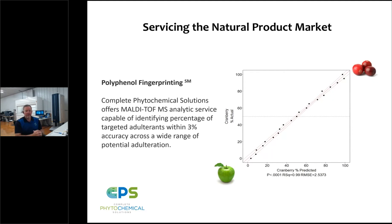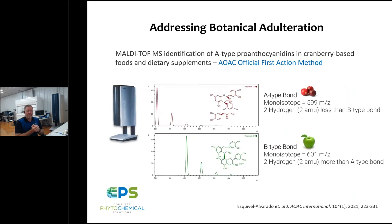There is a need for rapid, high-resolution analytic methods that are fit for purpose to address the continually shifting issues of adulteration in complex botanical products. By 'fit for purpose' I mean an analytic method or instrument targeting a select compound or class of compounds that are the basis of the adulteration. In the case of cranberries, we're focusing on proanthocyanidins. Complete Phytochemical Solutions has developed MALDI-TOF mass spectrometry methods to identify phytochemical profiles — or fingerprints — that are unique representations of a botanical.